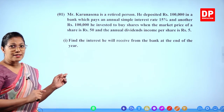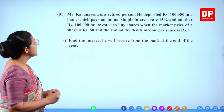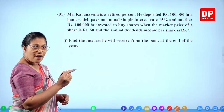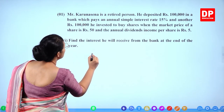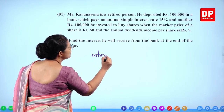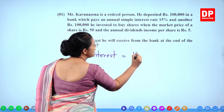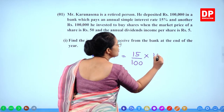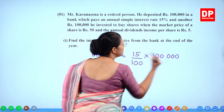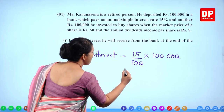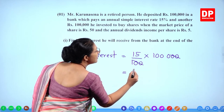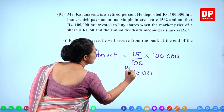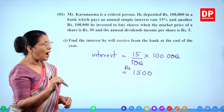The simple interest rate is 15%. You multiply 15% by 100,000 rupees. You can cross out two zeros, giving 15 × 1,000 = 1,500 rupees. This is for one year.